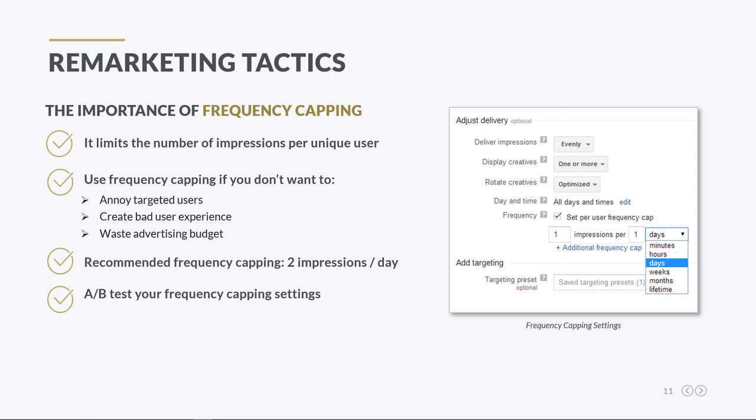Luckily, all demand-side platforms allow advertisers to limit the number of impressions per user through the frequency capping setting. For example, when an advertiser sets a frequency capping of two impressions per unique user per day, the campaign will deliver up to two impressions per unique user per day.